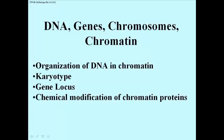Consider the structure of the DNA double helix in the context of the genes arrayed along the DNA, and how the DNA is organized into chromatin, and when the cell is dividing into chromosomes. We'll look at the basis for the organization of DNA in chromatin, the association of different proteins with the DNA. We'll look at the karyotype of chromosomes, and how genes are actually arrayed along chromosomes.